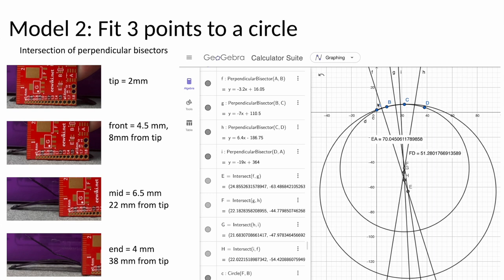So I did that for all combinations of these four points. You get these four different centers, F, G, H, and E. The largest diameter is point E, which goes through points A, B, and C, and it's 70 millimeters. And the smallest diameter is a circle that goes through B, C, D. That's point F, and it has a radius of 51 millimeters.